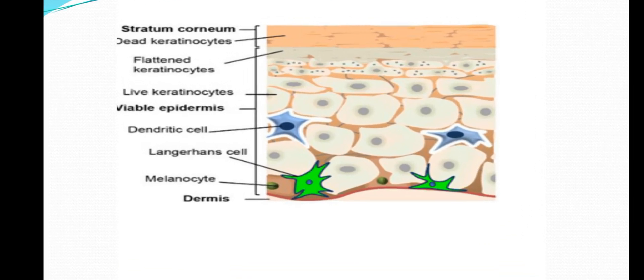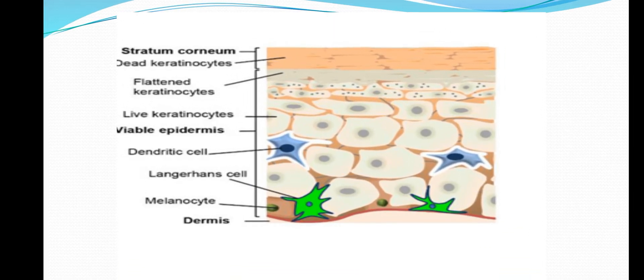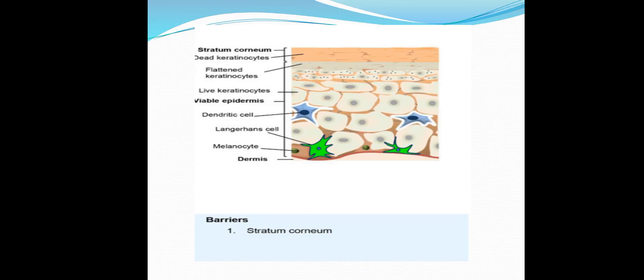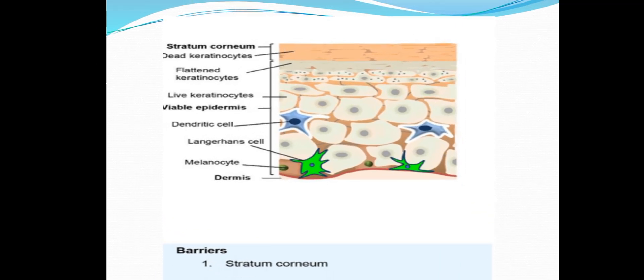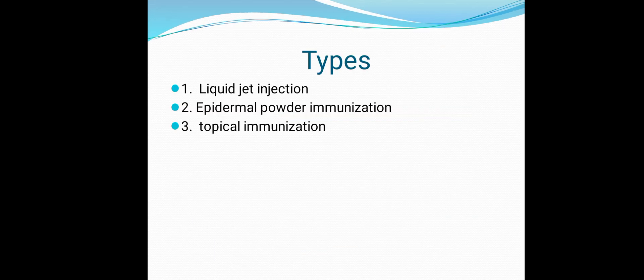The layers of the skin are stratum corneum, stratum lucidum, stratum granulosum, and stratum germinativum. The barrier is the stratum corneum — if it is too dry, absorption will be slow. The types of transdermal delivery are: first, liquid jet injection; second, epidermal powder immunization; third, topical immunization.